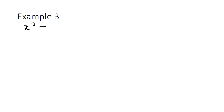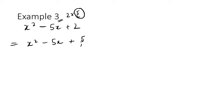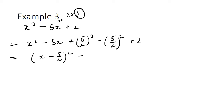In both examples so far, the coefficient of x has been an even number. The example I want to look at now is a case where the coefficient is an odd number. In this case, 5 is the same as 2 times (5/2), so 5/2 becomes our key number. We add (5/2)², subtract (5/2)² to keep balance, and then add 2 at the end. The first three terms become our perfect square, which we write as (x - 5/2)². Simplifying the next term: minus 25/4 plus 2, which is the same as 8/4.